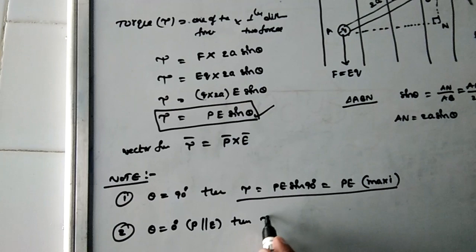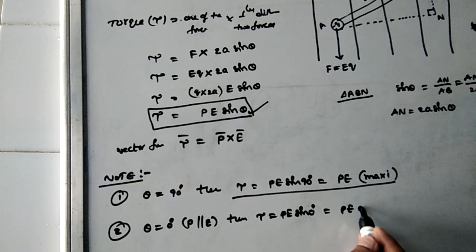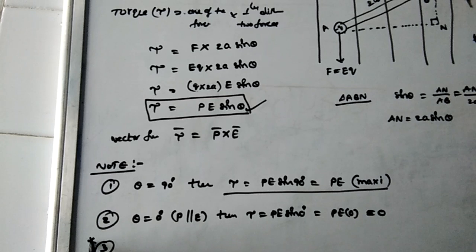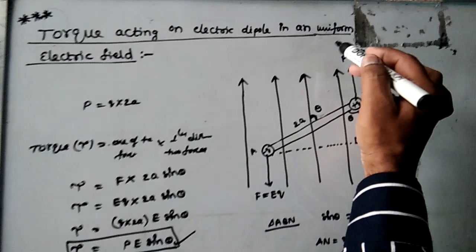Second important point: if theta equals 0 degrees, meaning the dipole moment is parallel to the electric field, then tau equals PE sin 0° equals PE × 0 equals 0. So the torque acting on the dipole is zero when the dipole is parallel to the electric field.